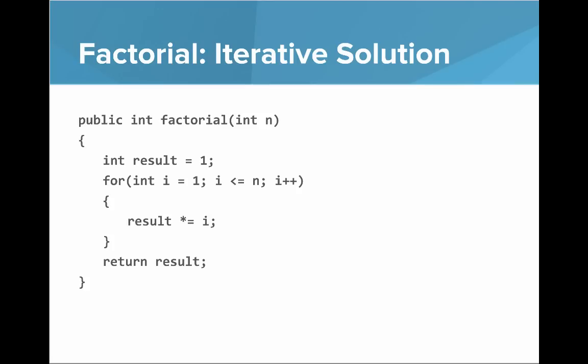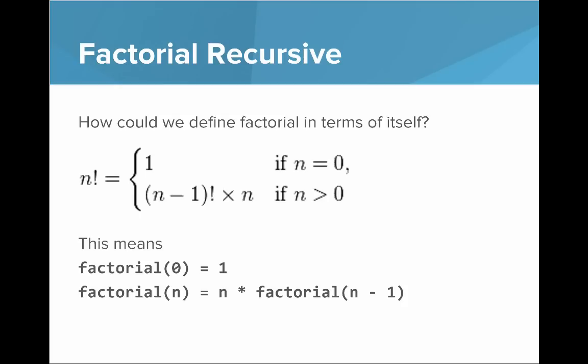But there's also a recursive version of factorial. So the question is, how could you define factorial in terms of itself? So what does n factorial look like? Well, the answer to n factorial is one if n is equal to zero. And if n is not zero, well what that really is, is it's n times n minus one factorial. So you can see that we have a definition of factorial that includes another call to factorial.